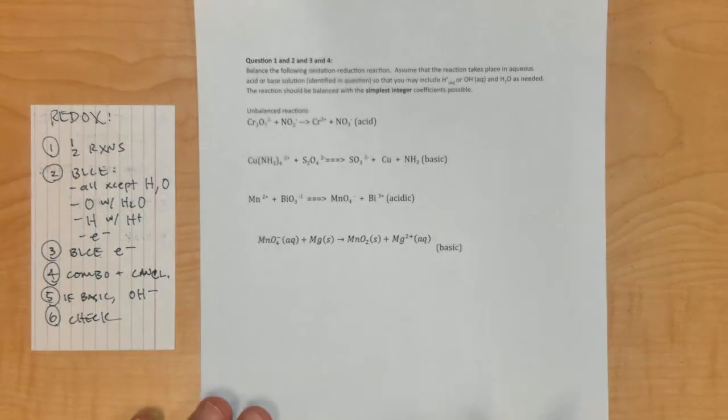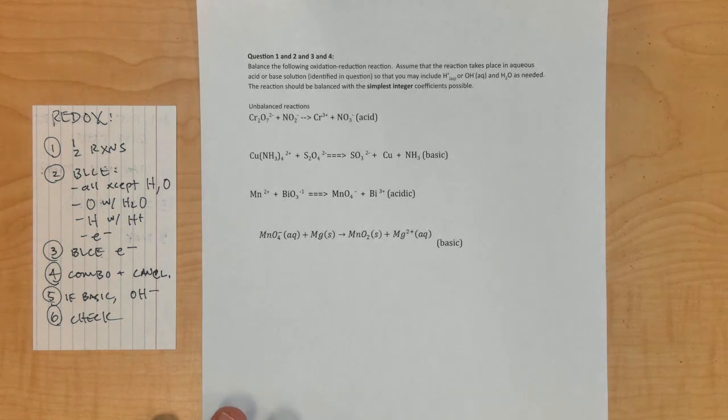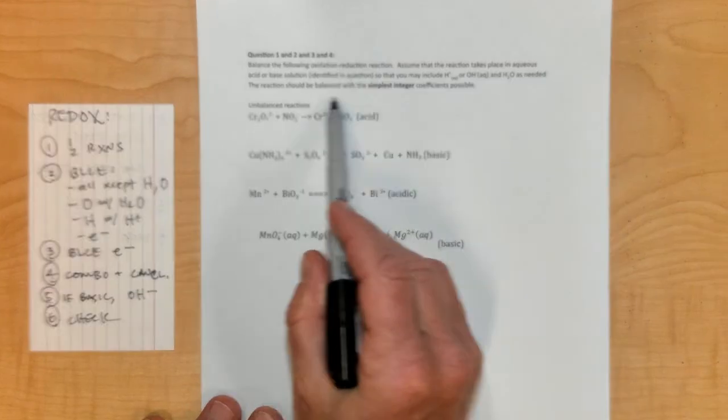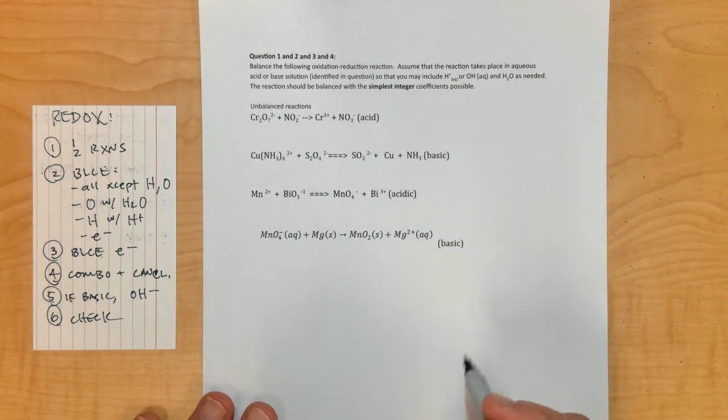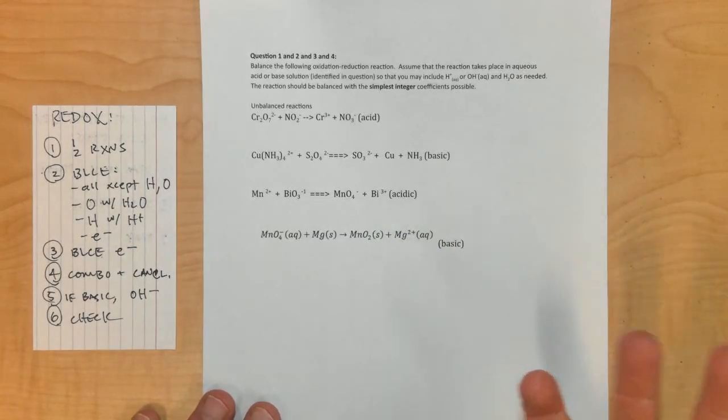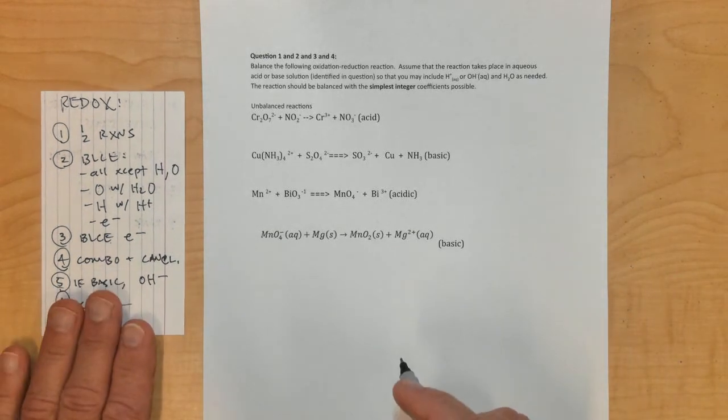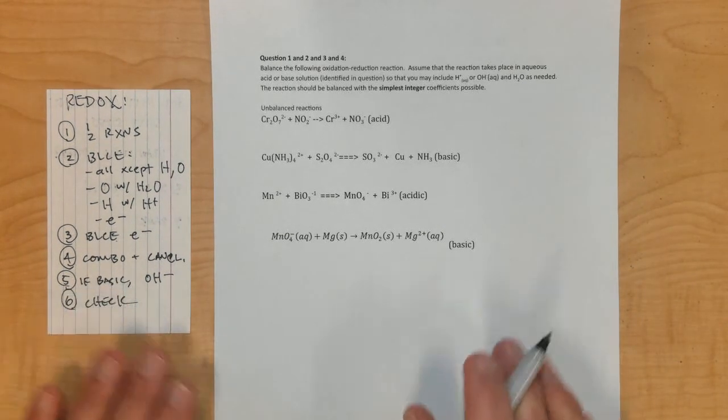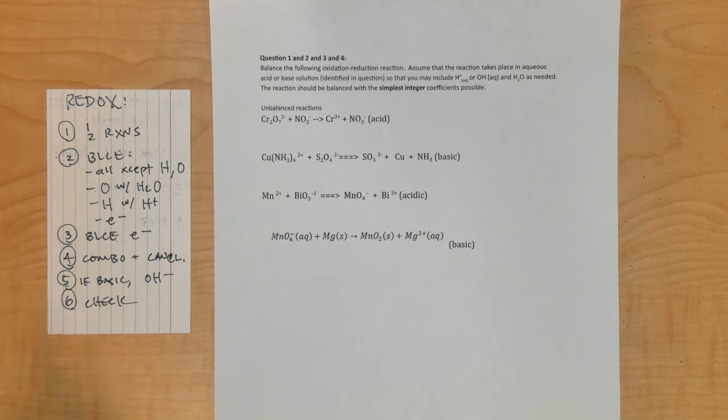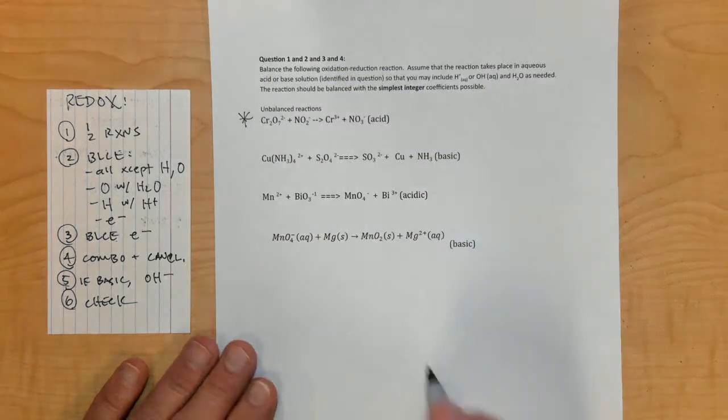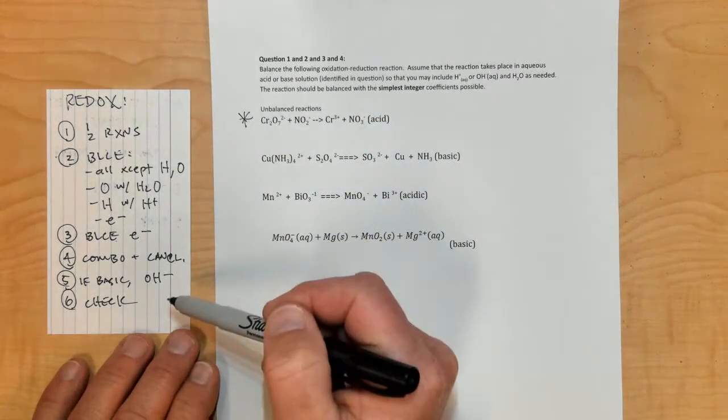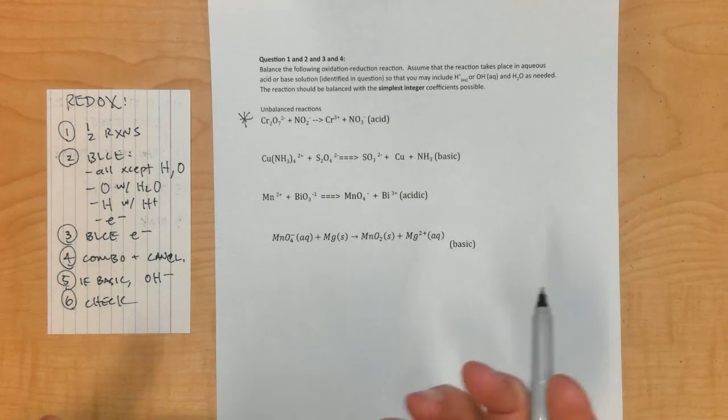It says, balance the following redox reactions, assuming that the reaction takes place in an aqueous, acidic, or basic solution, as described in the question. The reactions should be balanced with the simplest integers and coefficients possible. I'm going to do one of these right now, and then I'll give you references to where you can find the answers to the other ones.